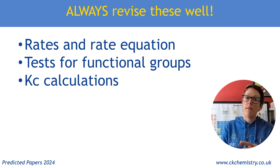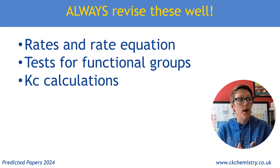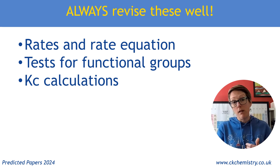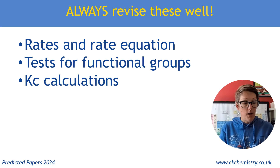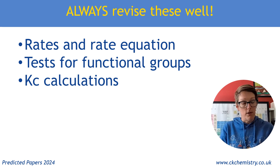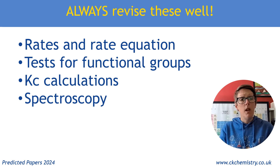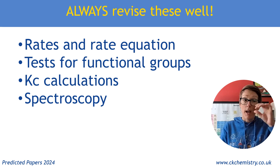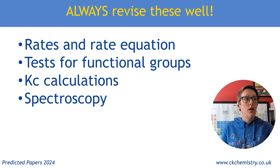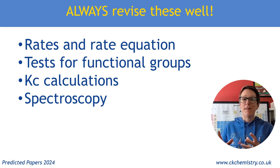Kc calculations — I mentioned that for Paper 1, but Kc and Kp can come up in either paper. Make sure you are solid on ICE tables, working out moles at equilibrium and concentrations. It's an organic-themed paper, so spectroscopy is a dead cert. Make sure you can do both types of NMR — carbon-13 and hydrogen — infrared, and have an idea about mass spec as well.